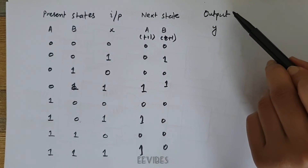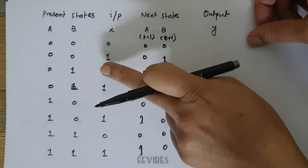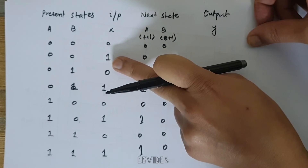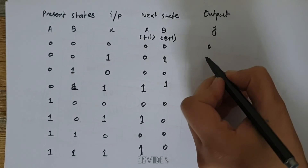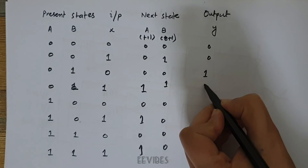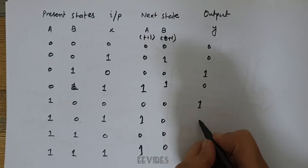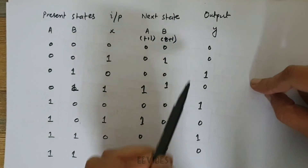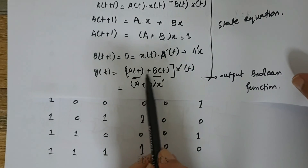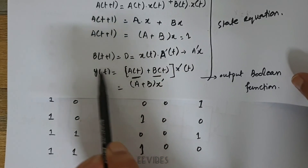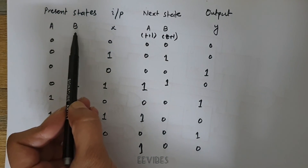The last step is to determine the output function Y = (A + B)·X'. Wherever X = 1, the output function equals 0. So the Y values are: 0, 0, 1, 0, 1, 0, 1, 0. You must remember that the output function is written in terms of A(t) and B(t), not A(t+1) and B(t+1). Be very careful to use A(t) and B(t) when determining Y(t).